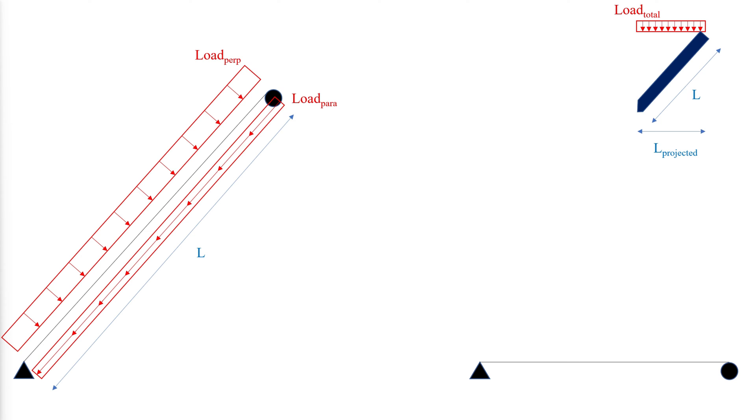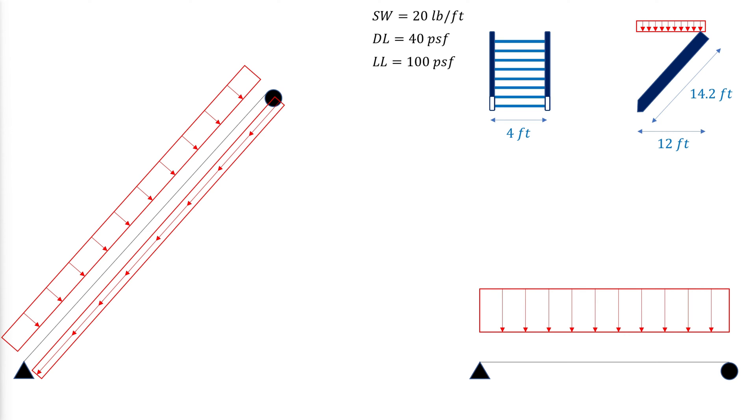In the horizontal plane method, the vertical loads are applied to the stringer beam with a span that is taken as the horizontal projection of the stringer.